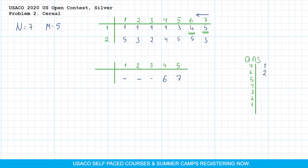Then we continue with cow number 5, whose first selection is cereal type 3, and cereal type 3 is not selected yet. So we are going to assign cereal 3 to cow 5, and the answer for cow number 5 will be 3. Now cow number 4's first choice is cereal type 1. Cereal type 1 is not selected either, so we are just going to assign cereal 1 to cow 4, and the answer will be 4.